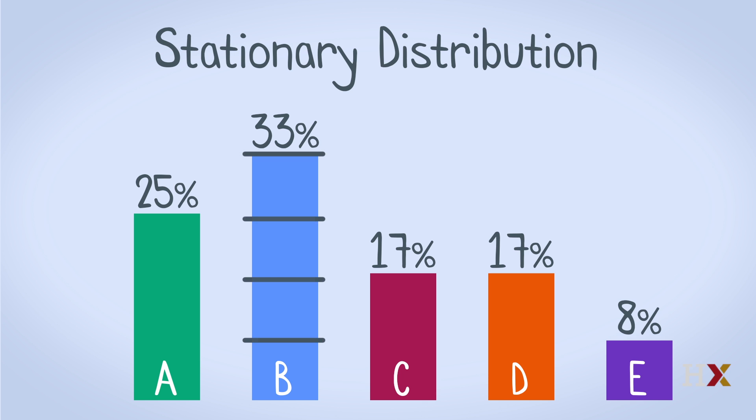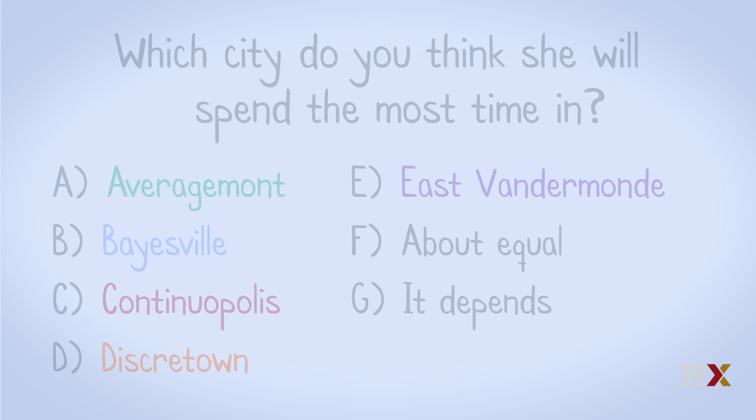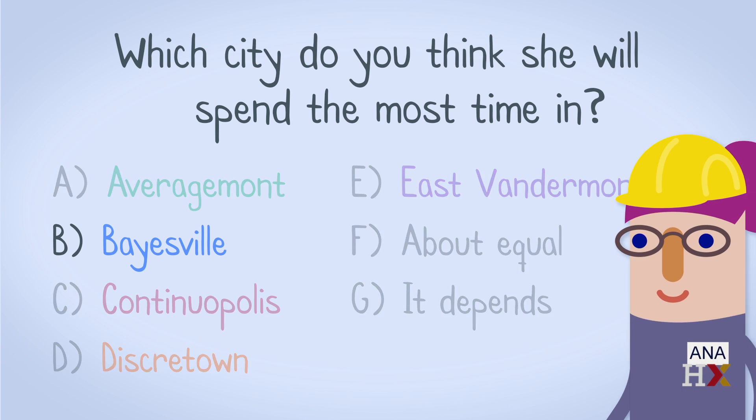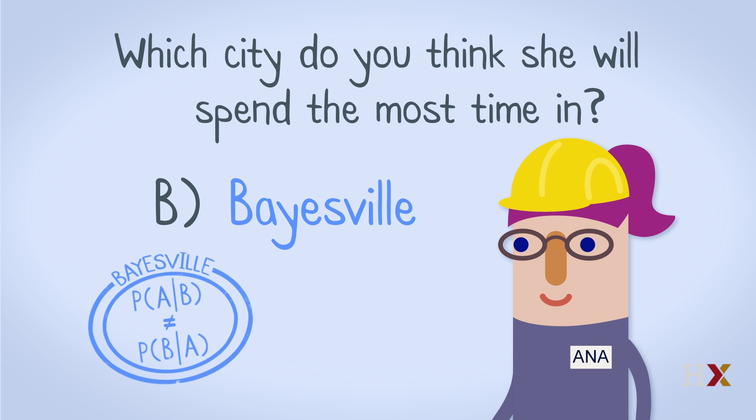It turns out that the percentage of time Anna spends in a city is proportional to its number of connections. For example, Baysville has four connections and East Vandermond only has one. So Anna visits Baysville four times as often as East Vandermond in the long run.